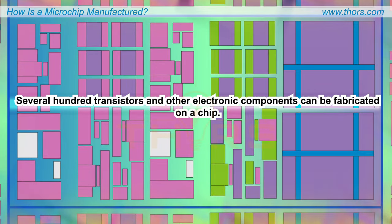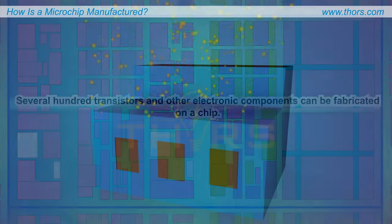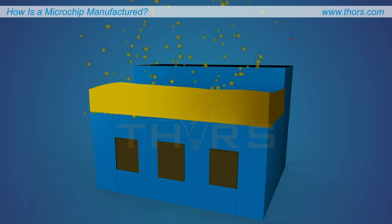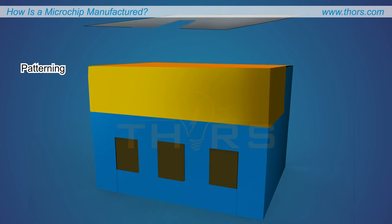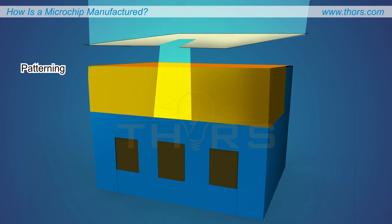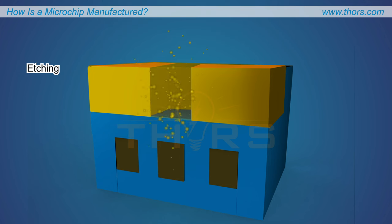Several hundred transistors and other electronic components can be fabricated on a chip through a series of manufacturing processes. These processes include deposition, or adding material; patterning, or exposing to light; and etching, or removing material to create fine structures on the wafer.